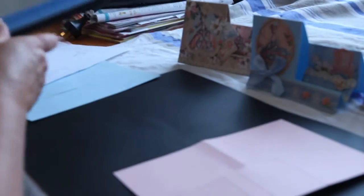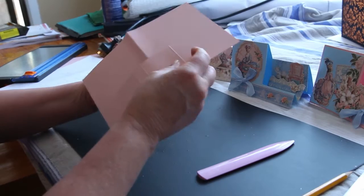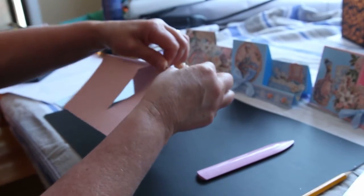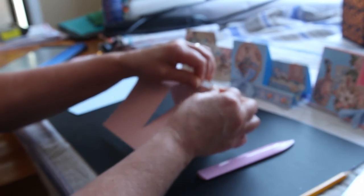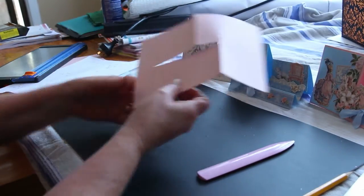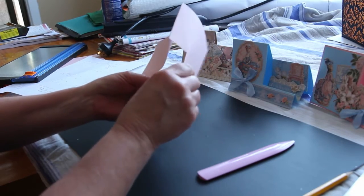So that one we did, then this one here is a mountain fold. On my map, M means mountain and V means valley. So we've got a mountain, a valley, a mountain.